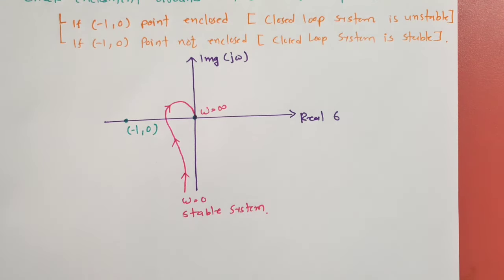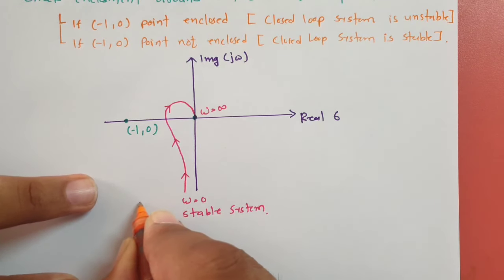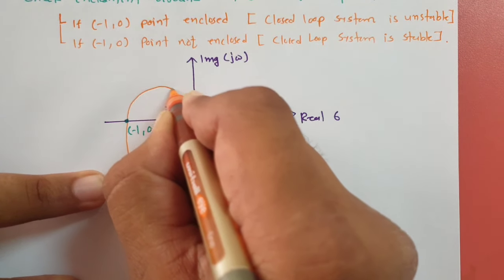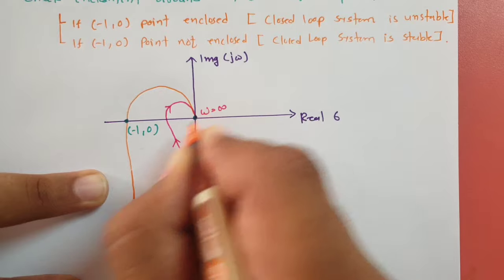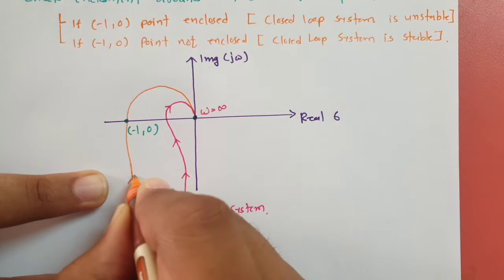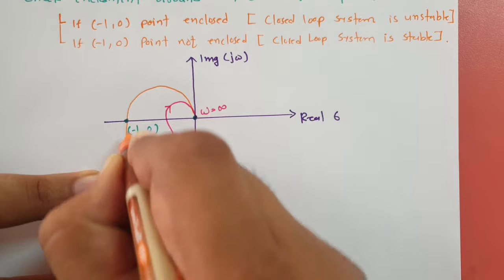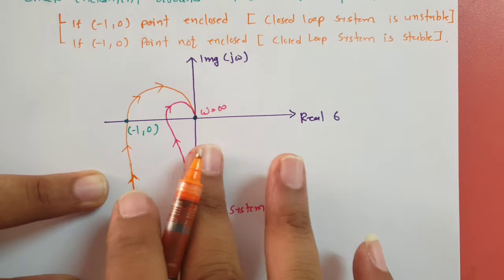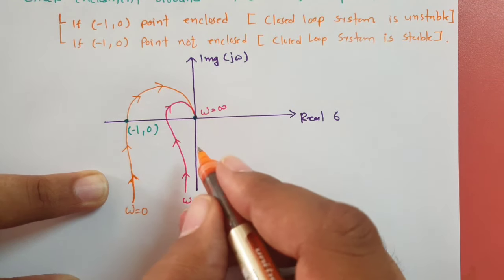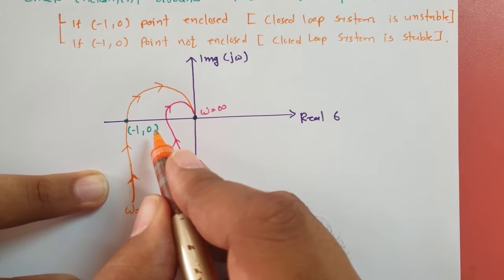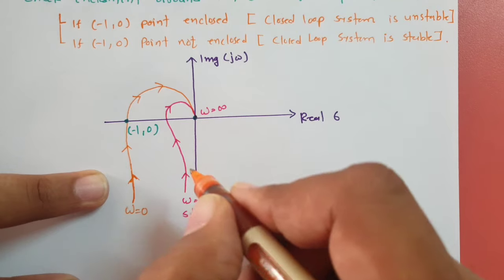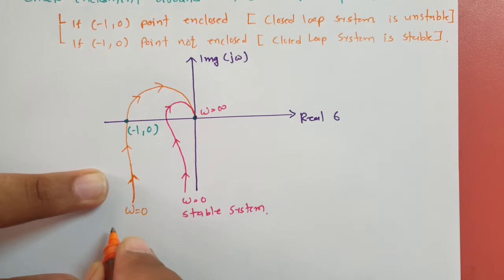In a second case, the polar diagram moves from omega equals 0 to omega equals infinite such that the right side of the path does not enclose minus 1 comma 0. However, the path itself intersects minus 1 comma 0. This system is critically stable.